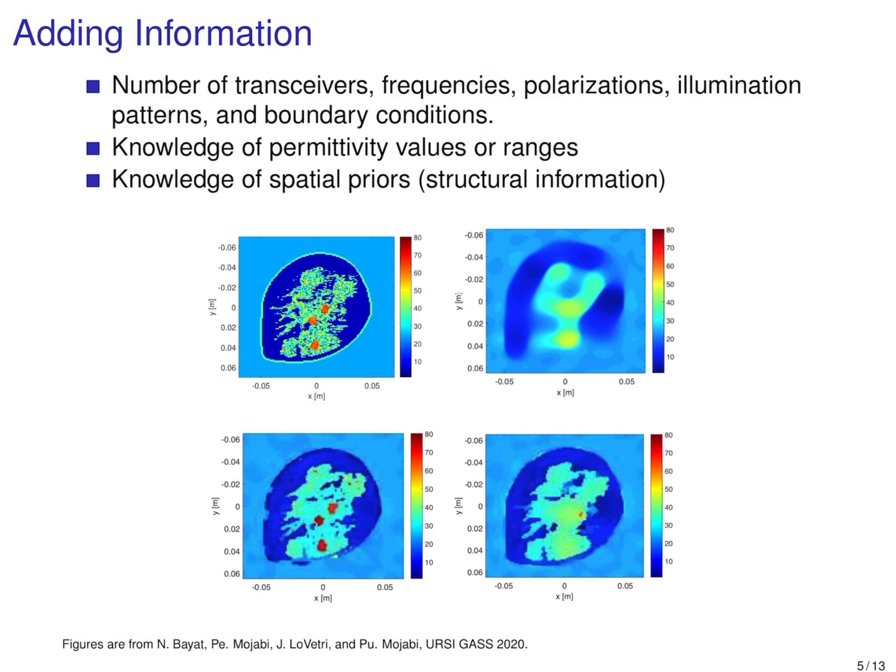There are different ways to add information to the inversion process. Perhaps the most obvious one is to increase the number of measurements and measurement diversities — for example, increasing the number of transceivers, frequencies of operation, polarization, illumination patterns, and boundary conditions of the system.